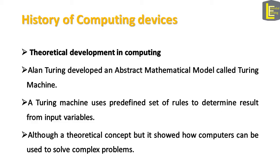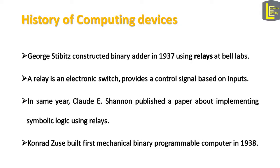Before World War II, Alan Turing developed an abstract mathematical model called the Turing machine. A Turing machine uses a predefined set of rules to determine results from input values. Although a theoretical concept, it showed how computers can be used to solve complex problems. After Alan Turing's mathematical model, theoretical and practical development started to happen at the same time in the field of computer science.